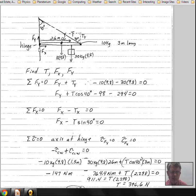The hinge is going to supply a force in the X direction pushing out on the beam and a force in the Y direction holding up this end of the beam at the wall.